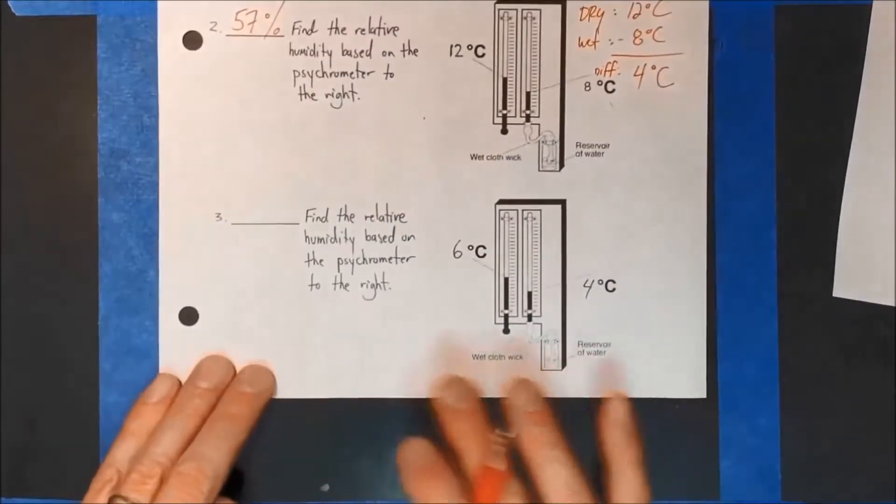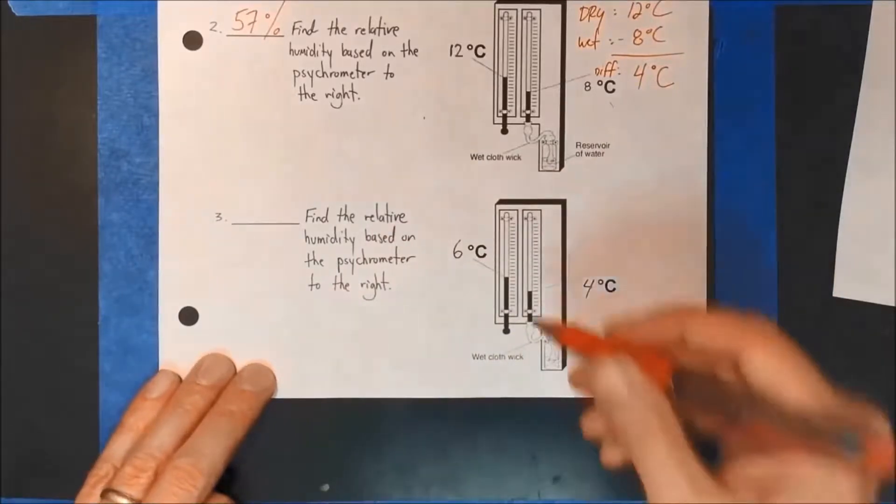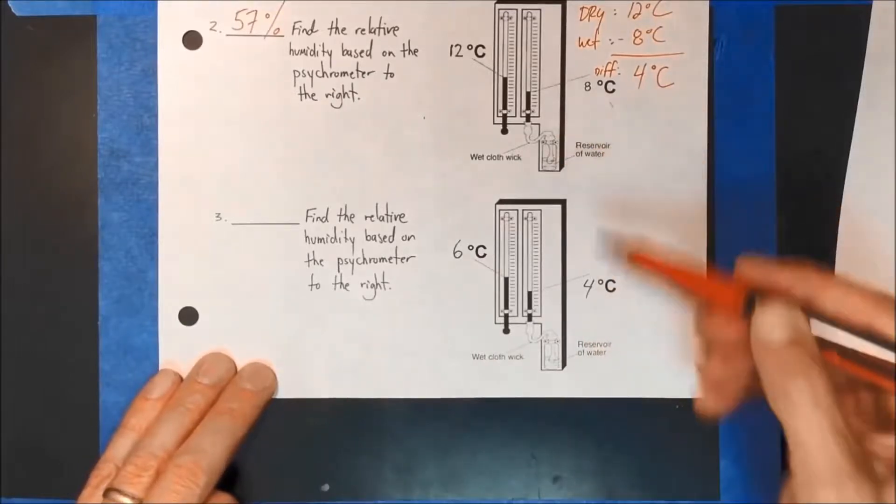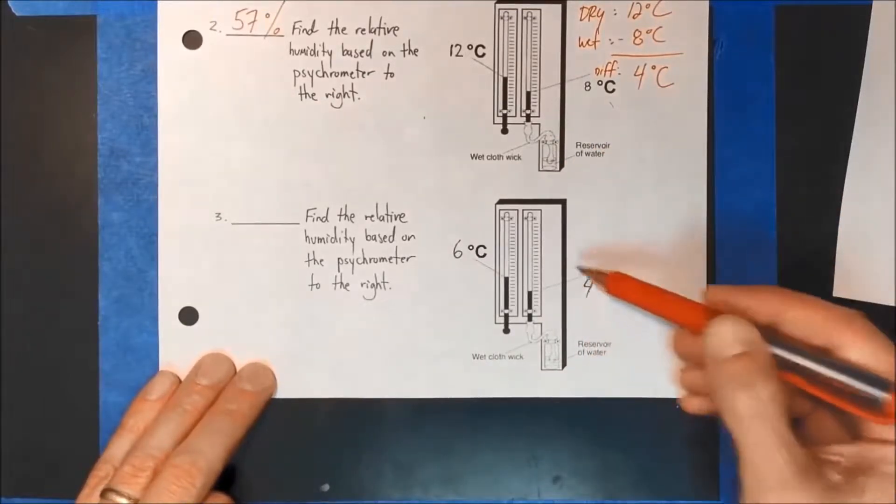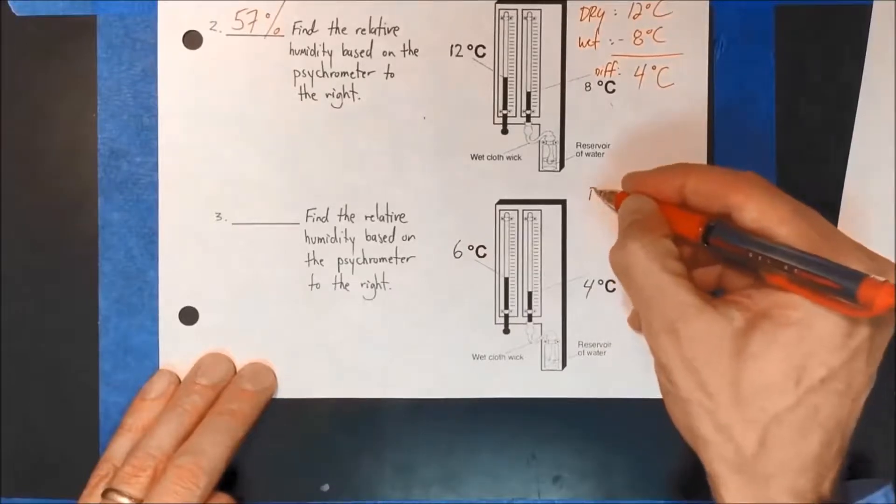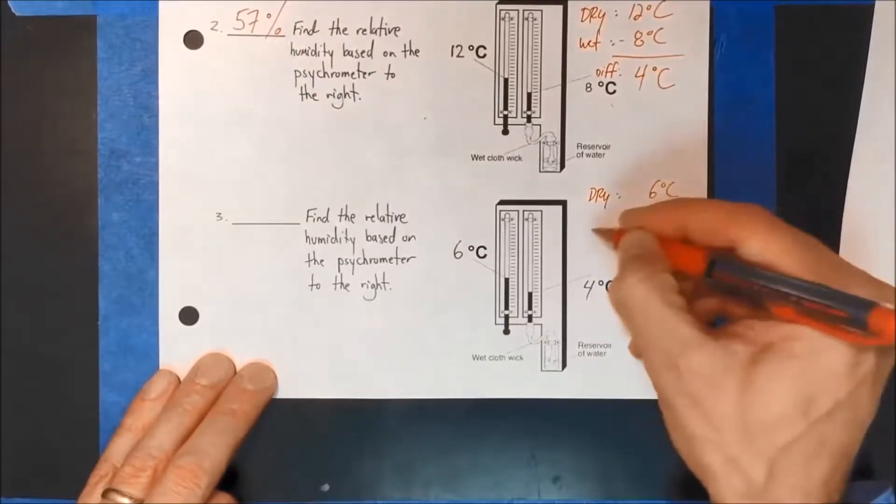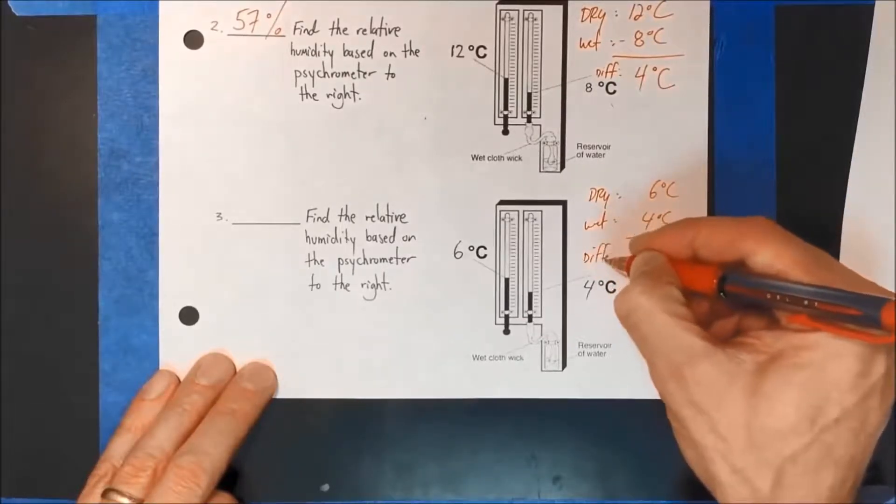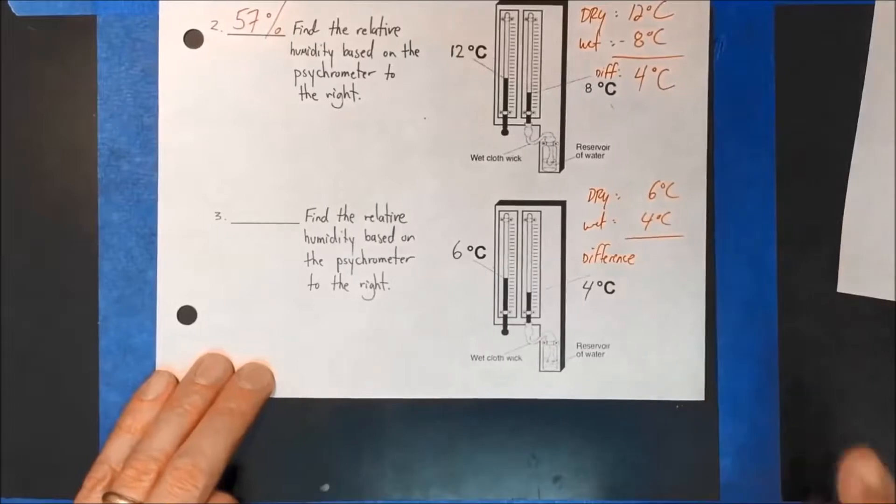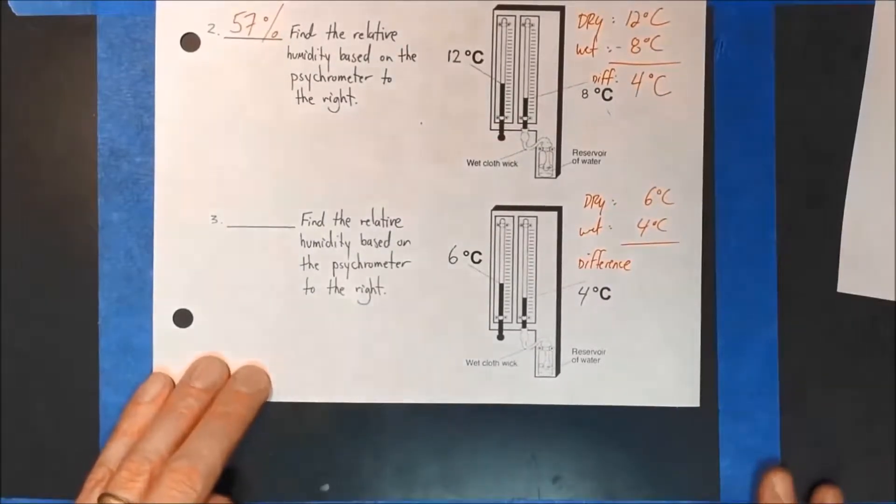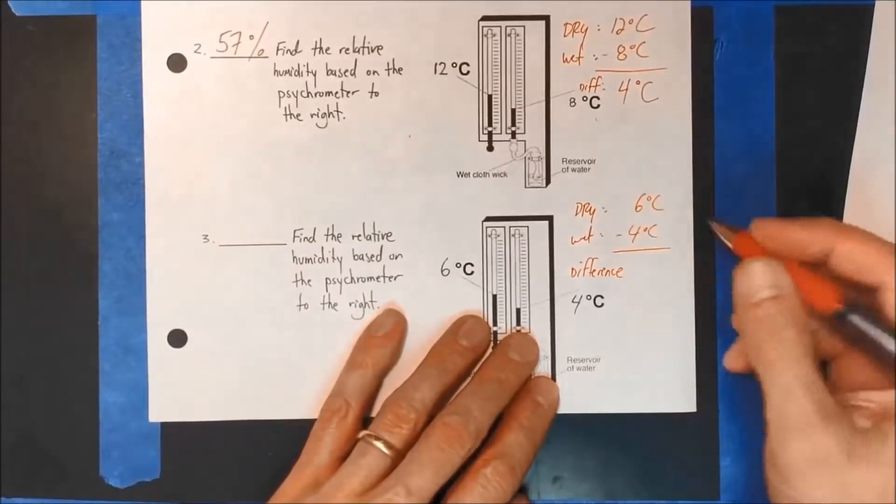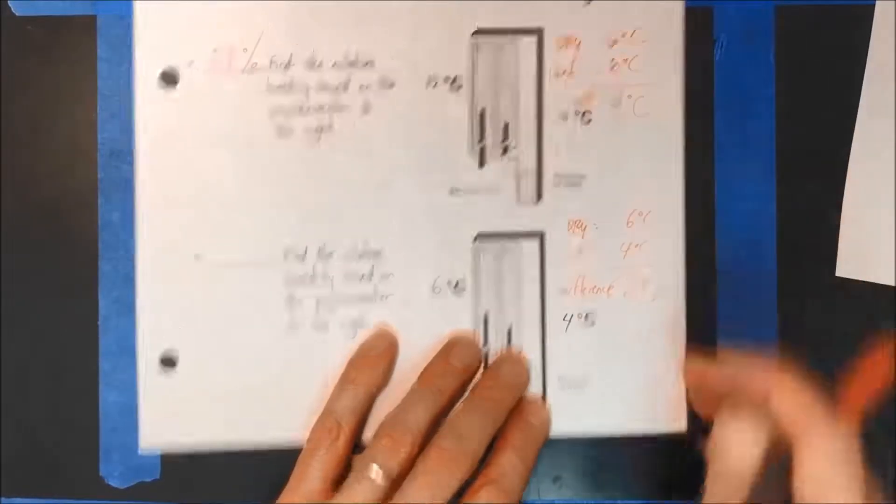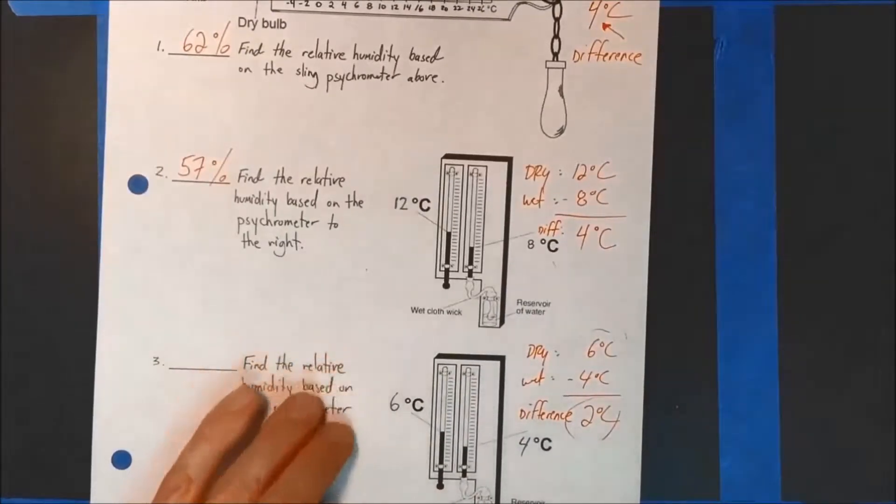Next one, 3. Find the relative humidity based on the psychrometer to the right. 6 degrees C and 4 degrees C. Again, similar, same diagram, just different numbers. This is the wet bulb. This is the dry. Dry bulb is 6 degrees C. Wet bulb is 4 degrees C. Difference, subtract them. And it's just absolute value here, no negatives or anything. So it's 2 degrees C difference. So I have a dry bulb of 6, a difference of 2. Let's go to our reference table.